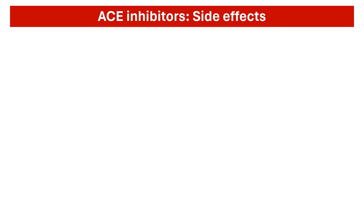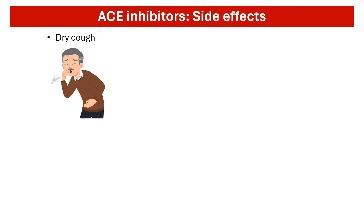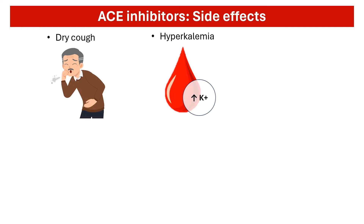While ACE inhibitors are highly effective in managing hypertension, they may be associated with some common side effects. A persistent dry cough is a well-known side effect, occurring in a minority of patients but can be bothersome and lead to discontinuation of the medication. ACE inhibitors can also lead to increased levels of potassium in the blood, or hyperkalemia, which can be particularly problematic for individuals with kidney dysfunction or those taking potassium-sparing diuretics.